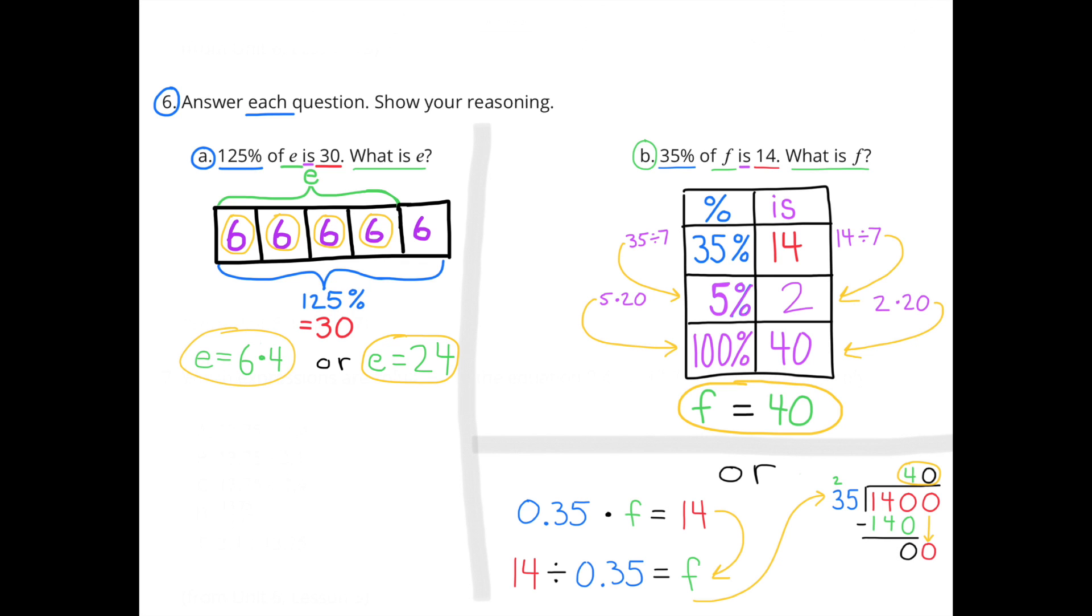Number 6. Answer each question. Show your reasoning. A. 125% of E is 30. What is E? In my diagram, you can see that 125% equals 30.